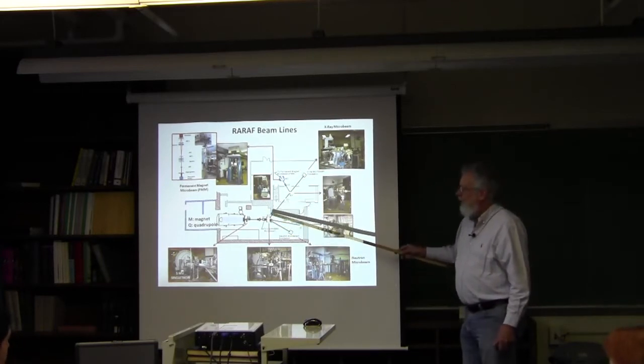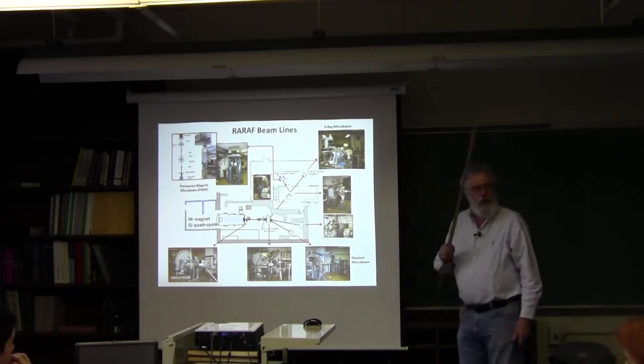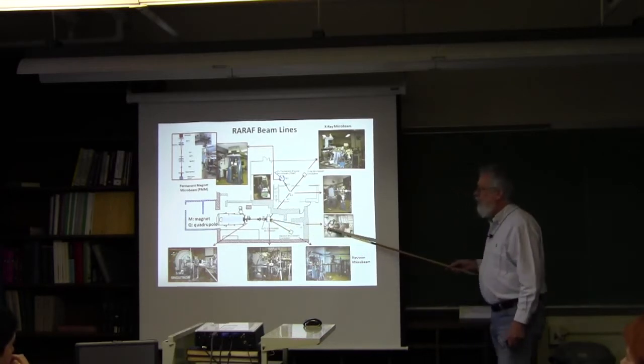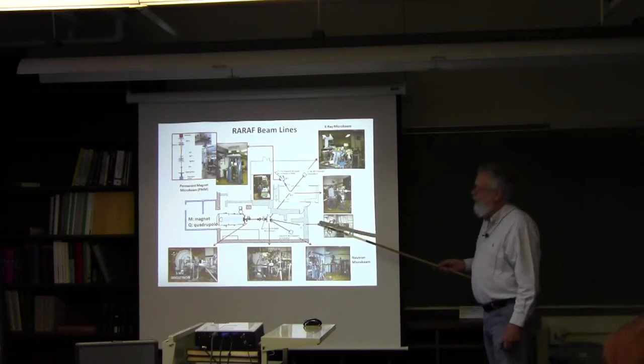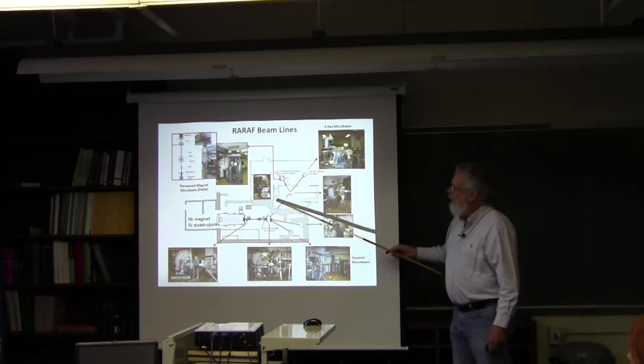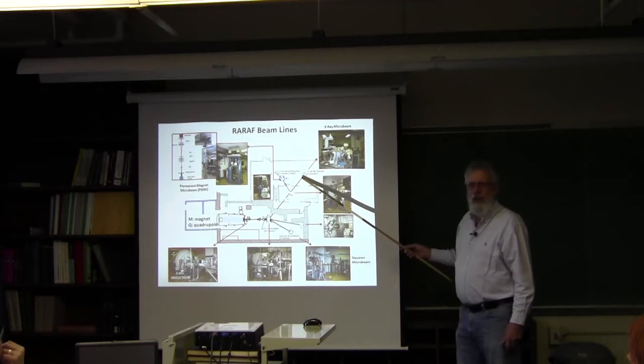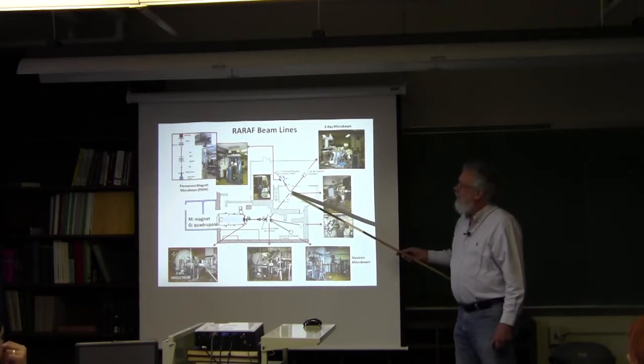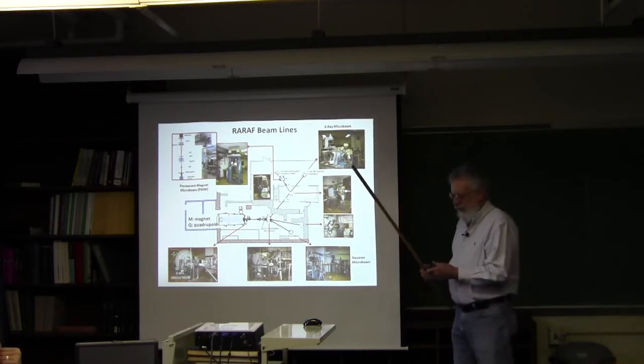In this position is where the neutron microbeam is being developed. If you go straight through here you end up in our broad beam radiation facility where track segment and neutron work is done. Through this bend, going straight ahead, you end up with the x-ray microbeam, and then there are a pair of magnets that bend the beam upstairs. The permanent magnet microbeam station is in that location.